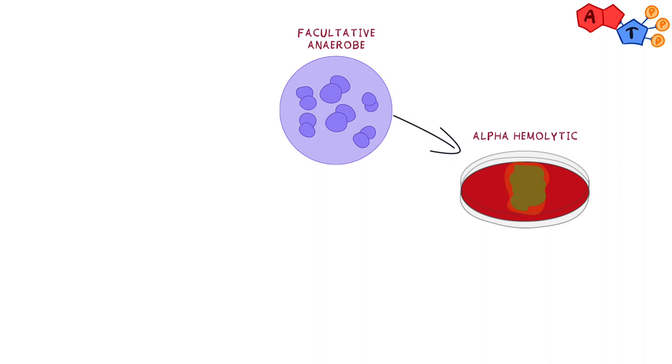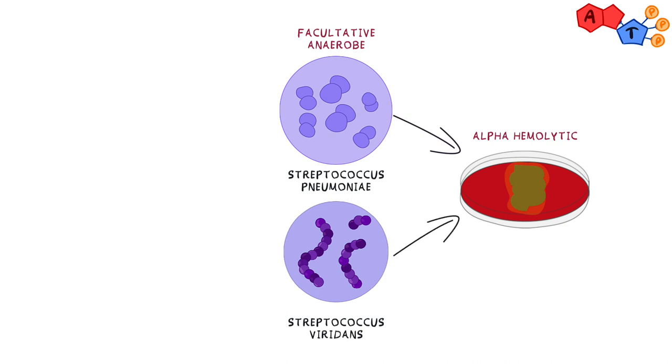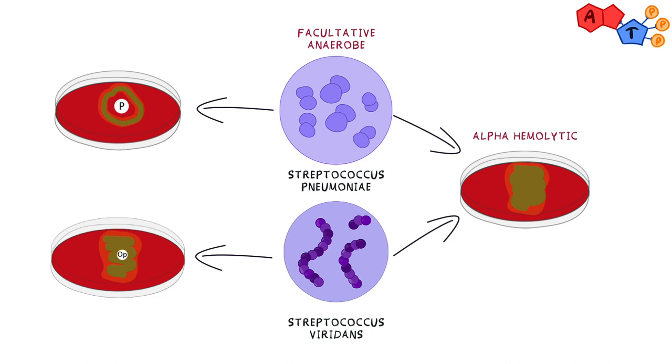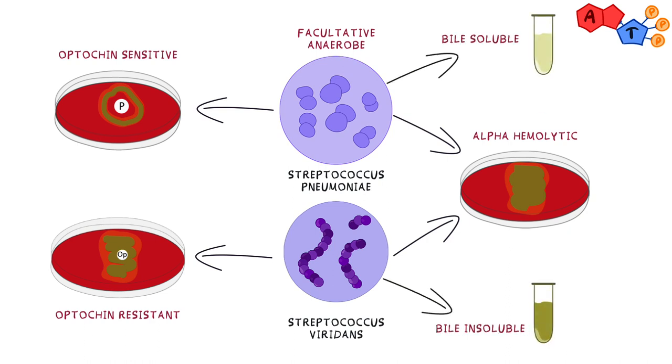So how can we differentiate Streptococcus pneumoniae from other bacteria that produce alpha-hemolysis? The answer is quite easy. First, the growth of Streptococcus pneumoniae is inhibited by optochin, hence they are optochin-sensitive, and they are lysed by bile as well. Both features help differentiate Streptococcus pneumoniae from other alpha-hemolytic Streptococci.